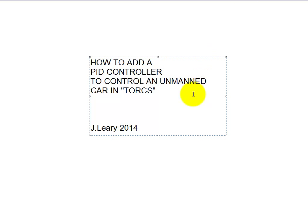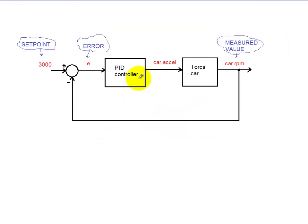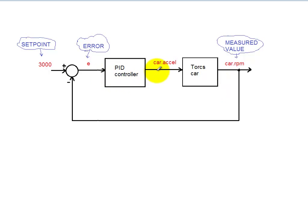In this video I'll show you how to add a PID controller - that's a proportional integral derivative controller - to control an unmanned car in Torque. We will use that controller to control the engine speed and RPM, giving it a set point of 3000 RPM. We'll do that by controlling the throttle, which is the accelerator pedal.